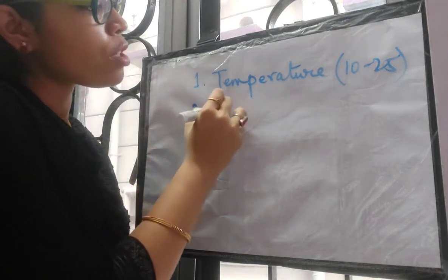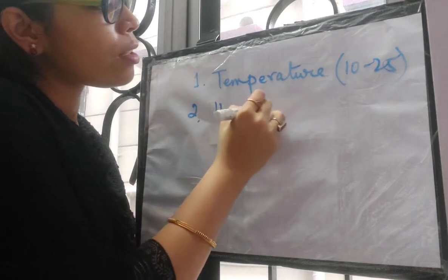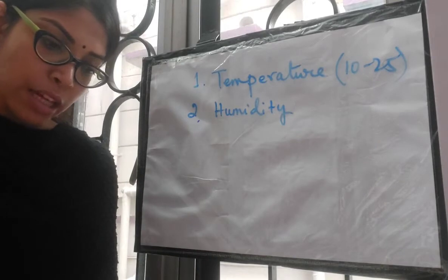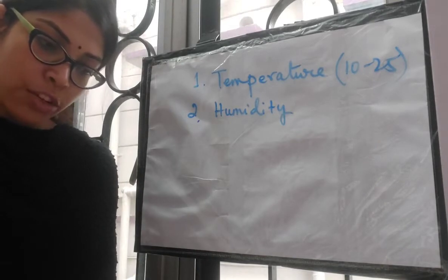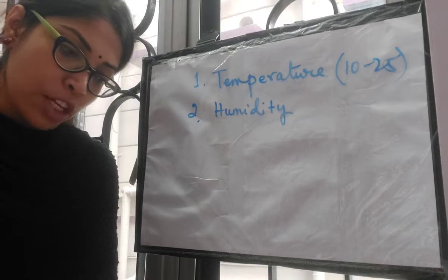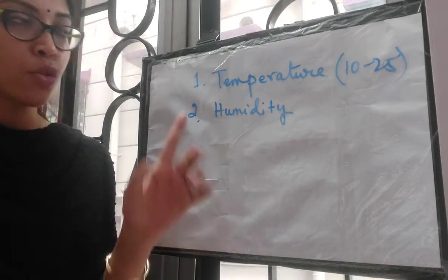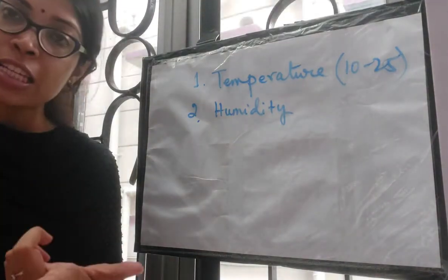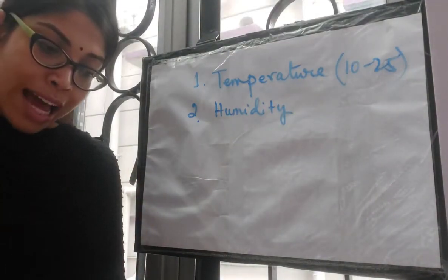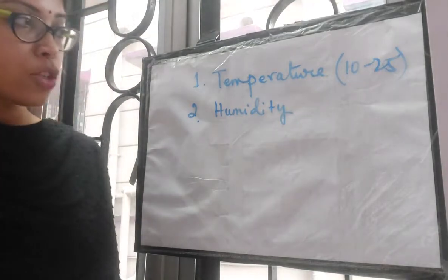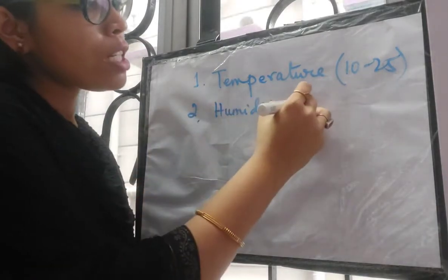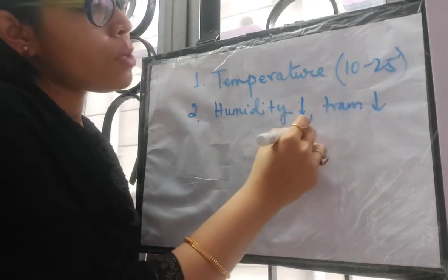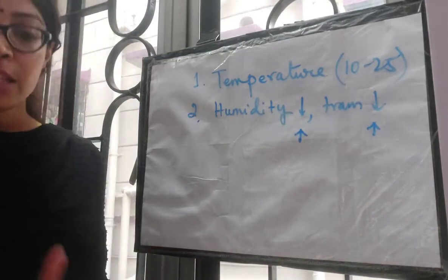Moving on to the second point which is humidity. Transpiration rate increases at lower humidity — as we already saw in the previous point. And it decreases at higher humidity. So: humidity low → transpiration low; humidity high → transpiration high.